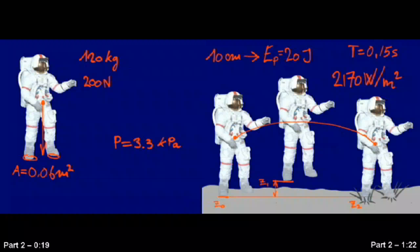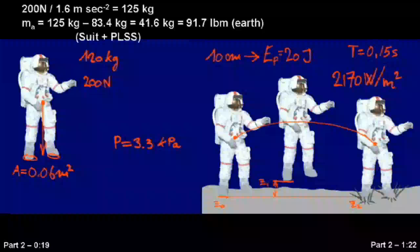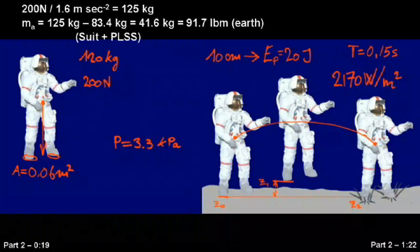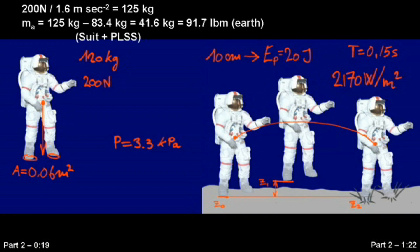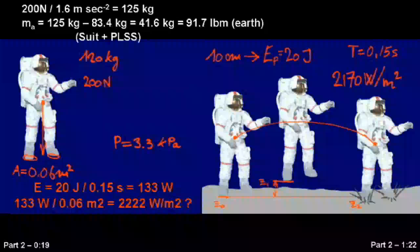Another example is one that Gilliam uses: an astronaut weighing 200 newtons on the moon. Subtract the mass of his suit and his PLSS, and there's not even a 98 pound weakling left. While this astronaut is walking on the moon, at the apex of his step he has 20 joules of potential energy. After falling 10 centimeters in 150 milliseconds, my stopwatch gave 600 milliseconds, he has 133 watts of kinetic energy.